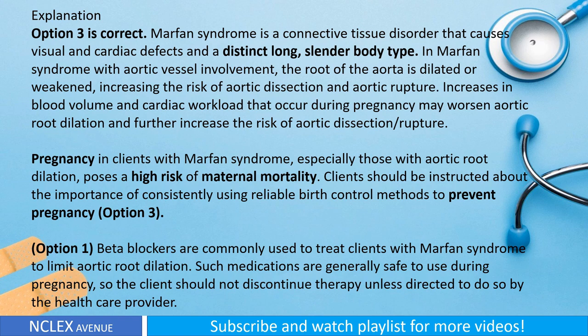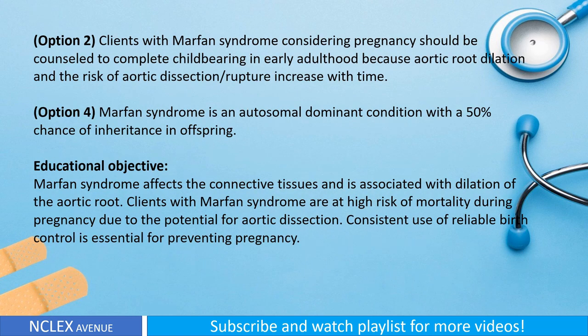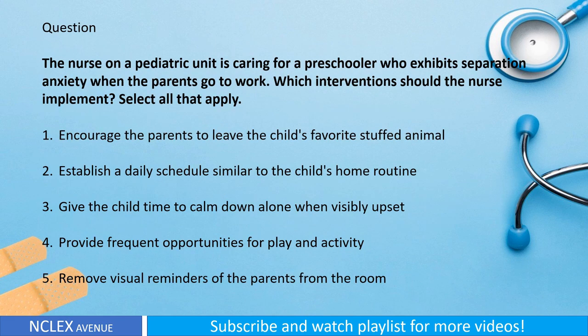Option two: Clients with Marfan syndrome considering pregnancy should be counseled to complete childbearing in early adulthood, because aortic root dilation and the risk of aortic dissection or rupture increase with time. Option four: Marfan syndrome is an autosomal dominant condition with a 50% chance of inheritance in offspring. Educational objective: Marfan syndrome affects the connective tissues and is associated with dilation of the aortic root. Clients with Marfan syndrome are at high risk of mortality during pregnancy due to potential aortic dissection; consistent use of reliable birth control is essential.